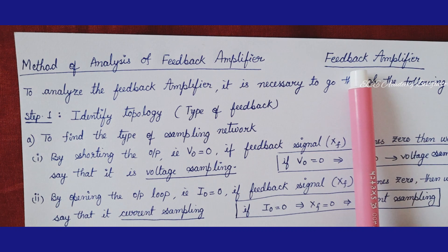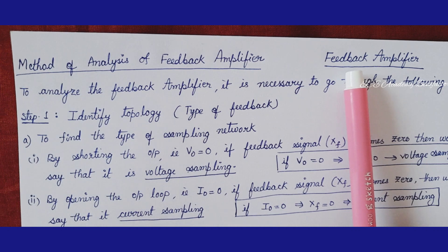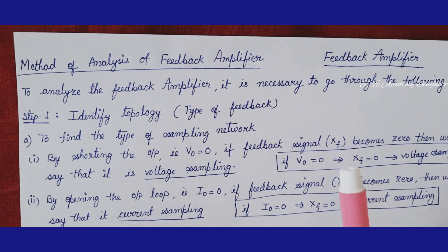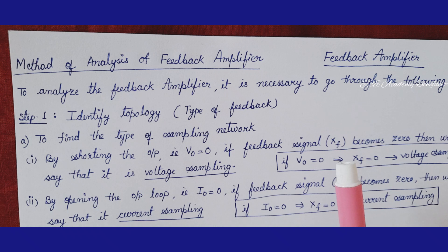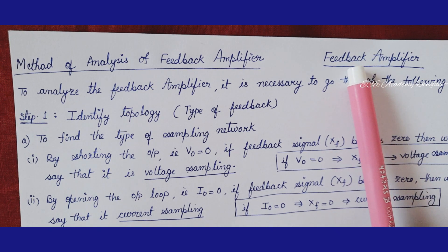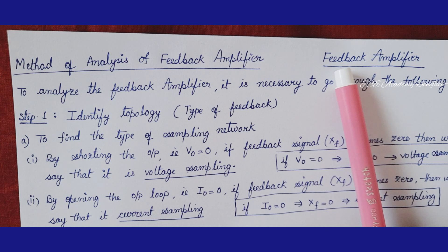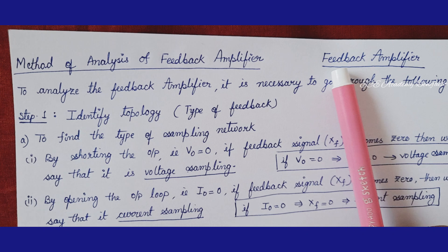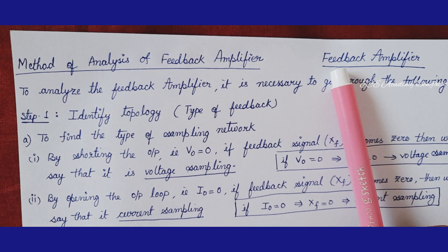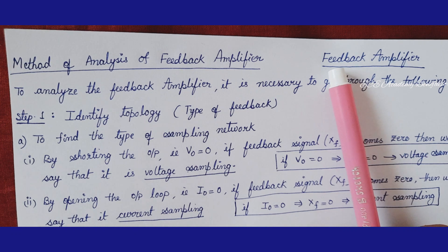As you know, there are four feedback amplifiers: voltage series feedback amplifier, voltage shunt feedback amplifier, current series feedback amplifier, and current shunt feedback amplifier. The feedback amplifiers can be analyzed in two ways. One is using the topology method, which we have already covered in our previous classes. In this class we will be discussing the steps or the method to be followed for analysis of a feedback amplifier when it involves an active device like a BJT.